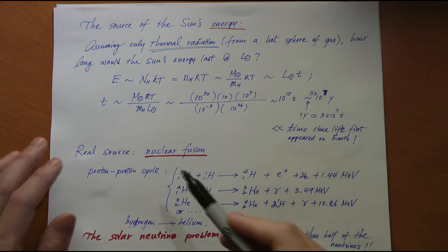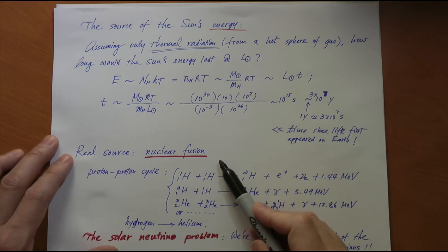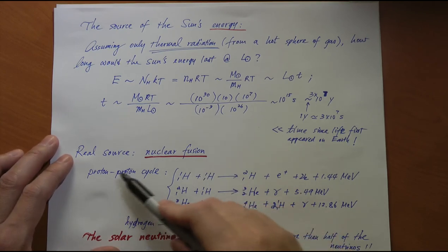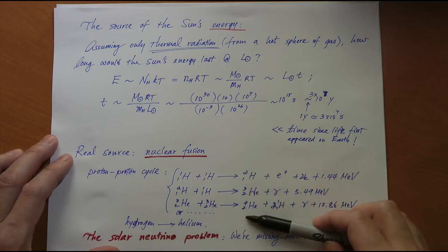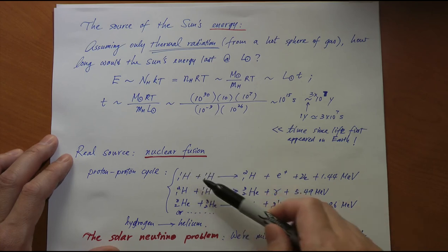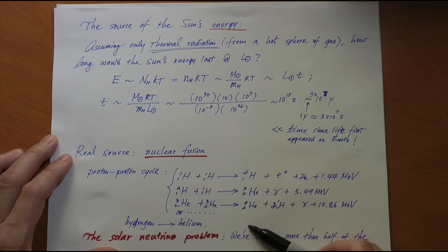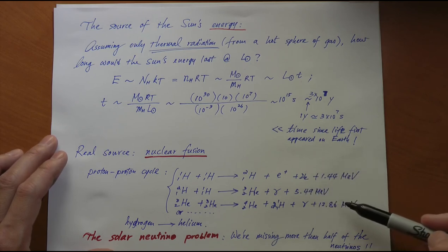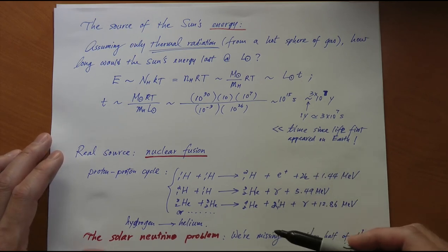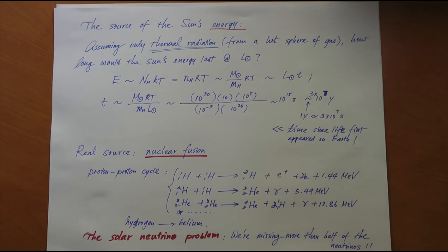Take a look at the real source, nuclear fusion. At the center of the sun, the core, the temperature is high enough so that proton-proton cycle can go on. These are some of the equations that I wrote before for the proton-proton cycle. You start with protons, eventually fuse into helium. Every step releases energy.